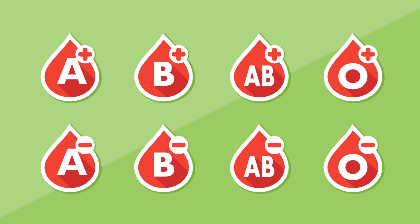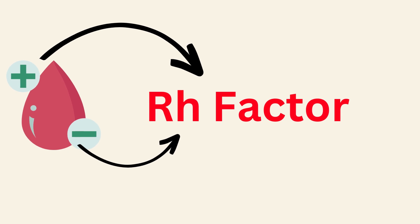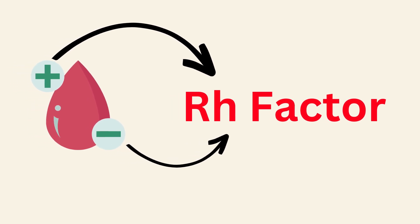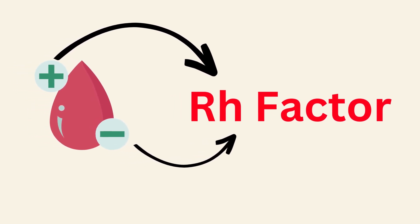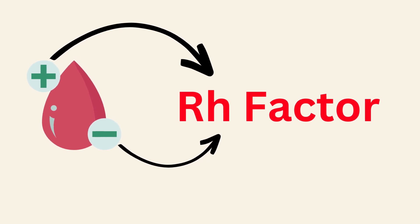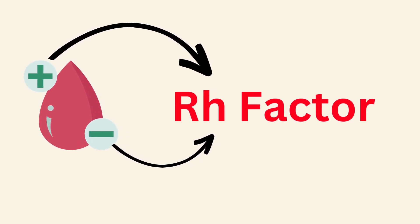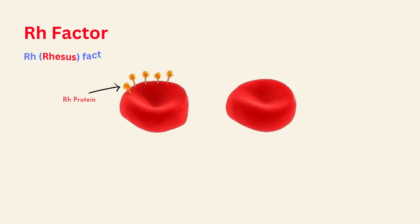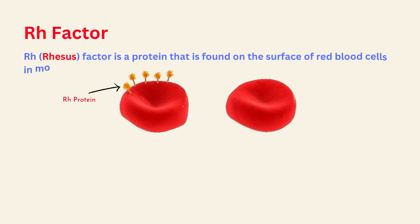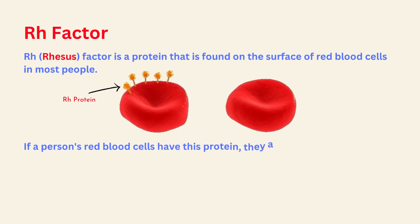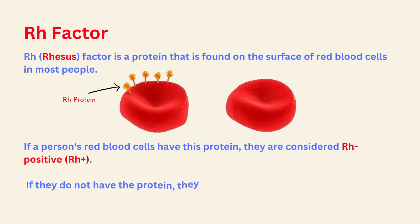Let's see what this Rh factor is. There are eight major blood group types including both positive and negative, which are considered to be an Rh factor. The Rhesus factor is a protein that is found on the surface of red blood cells in most people. If a person's red blood cells have this protein, they are considered to be Rh positive. If they don't have this protein, they are considered to be Rh negative.